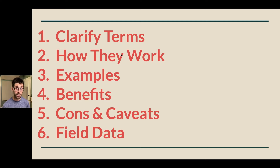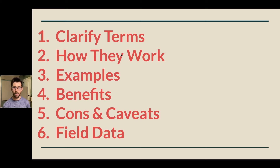Then we're going to talk about how cardioid subs actually work — not a deep dive into specific configurations, because there are lots of ways to get this cardioid pattern, but what are the underlying principles? Number three: some examples — what do these arrays look like in the field and how have I deployed them? Number four: the key benefits — it's not worth learning all this math if it doesn't help us, but I really do think it does. Number five: the key cons and caveats. And number six: some field data to verify that a cardioid subarray is doing what we ask of it.